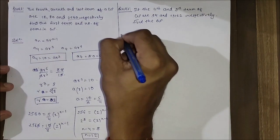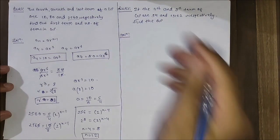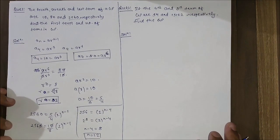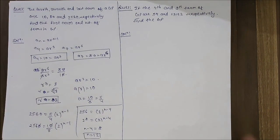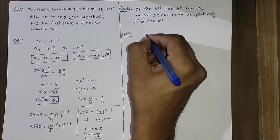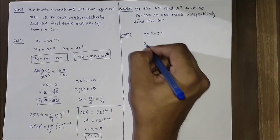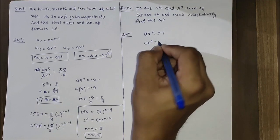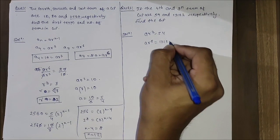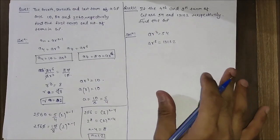Let's solve the second question. If the fourth and ninth term of a GP are given, find the GP. We can write ar³ equals 54 and ar⁸ equals 13122. Let's divide them.